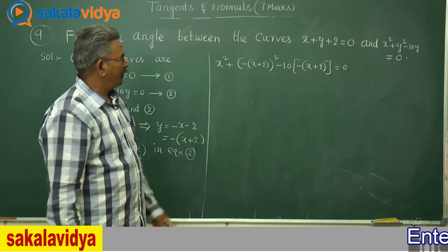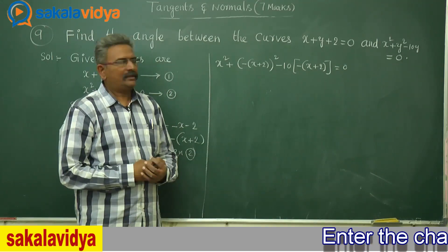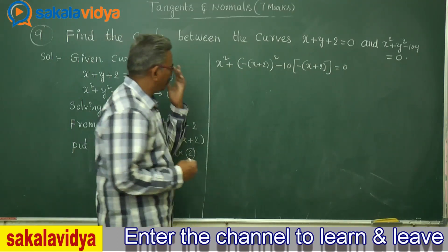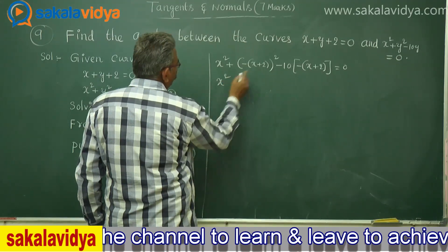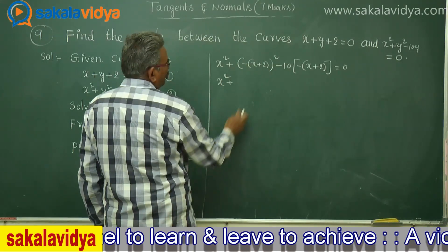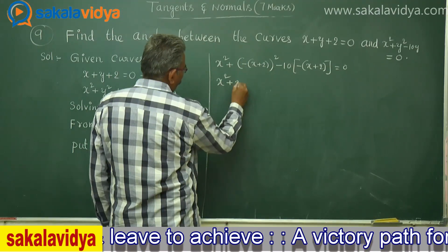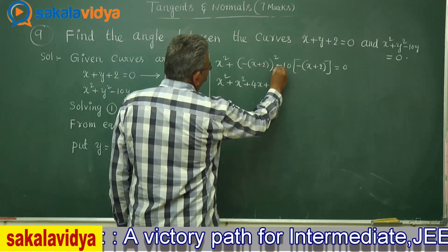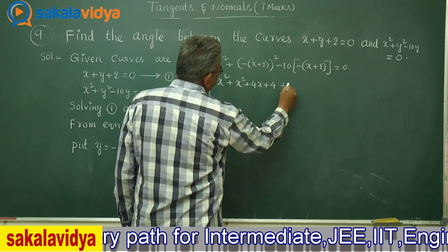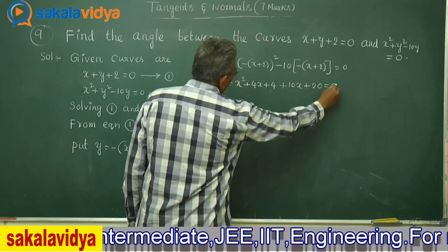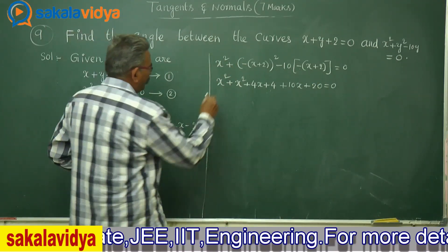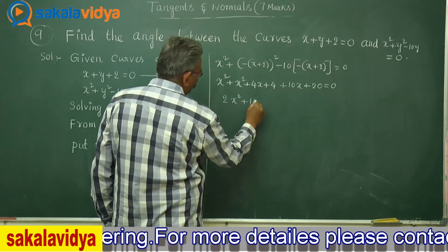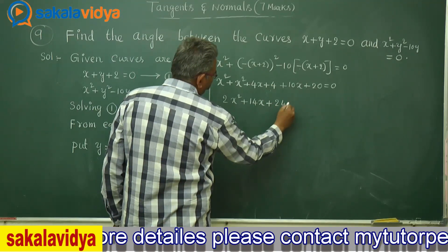Let it be simplified. We may expect a quadratic equation in terms of x. Expanding: x square, then this is a plus b whole square, so x square plus 2ab giving 4x, plus b square giving 4, minus 10 into minus gives plus 10x plus 20 equals to 0. Collecting terms: 2x square plus 14x plus 24 equals to 0.